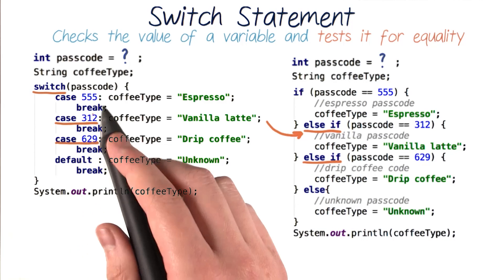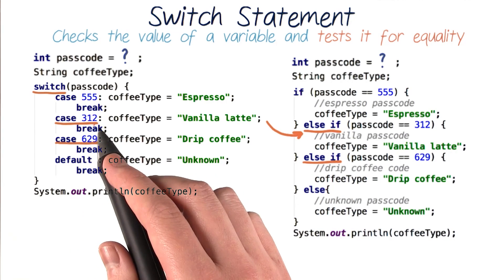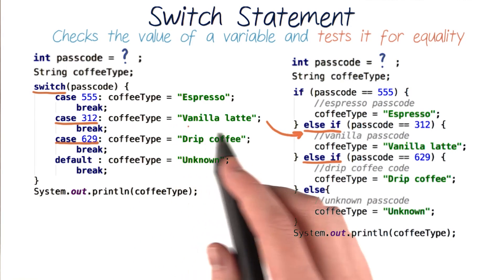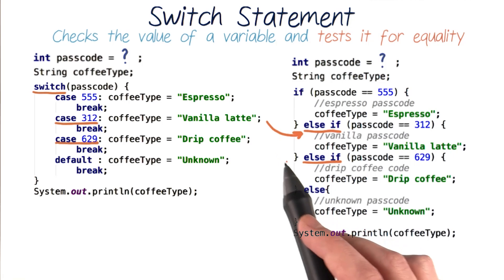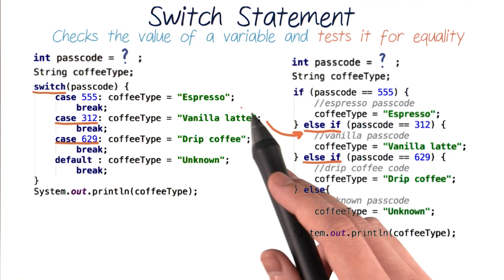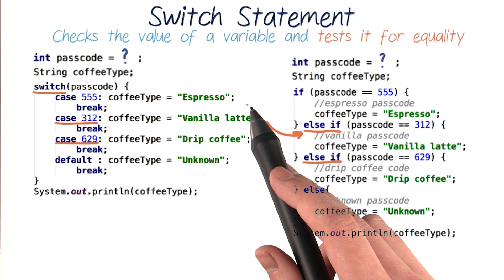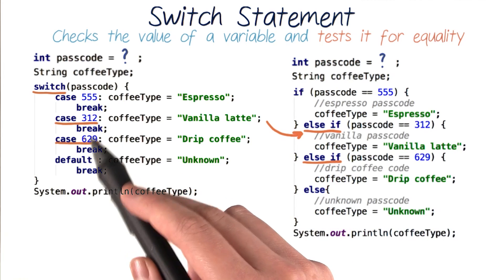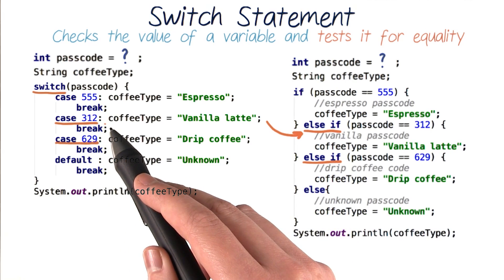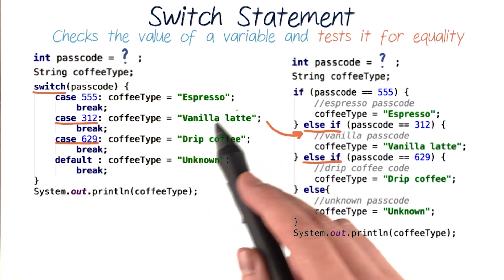And case 312 and case 629 correspond to our else if code. This case checks if our passcode is equal to 312. If it is, we set our coffeeType to be vanilla latte. If it's not, we move on to our next case, just like we'd move on to our next else if. So these three cases check for our three known passcode values. And if our passcode matches any one of these values, we'll enter the corresponding case code and set our coffeeType to the correct coffee value.